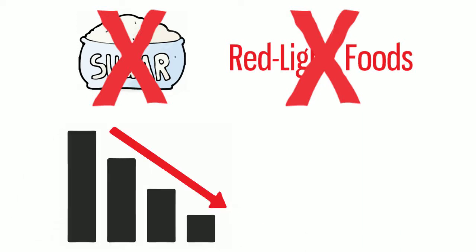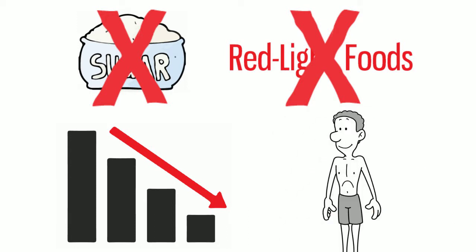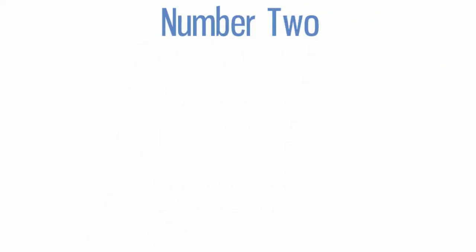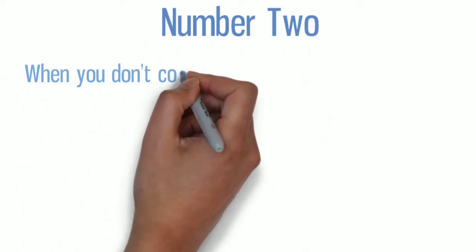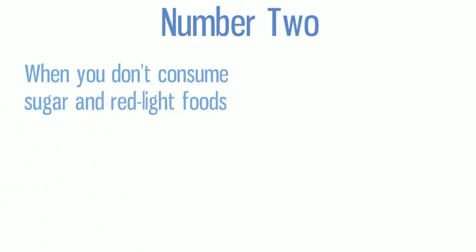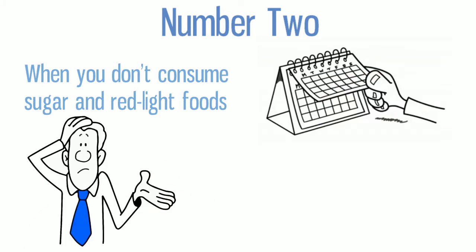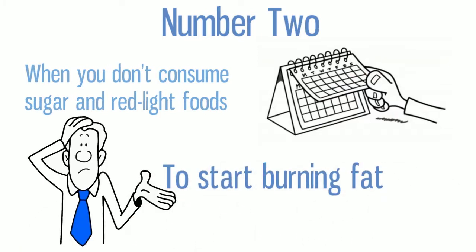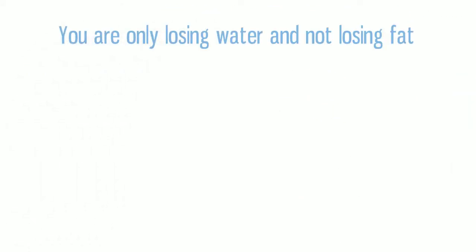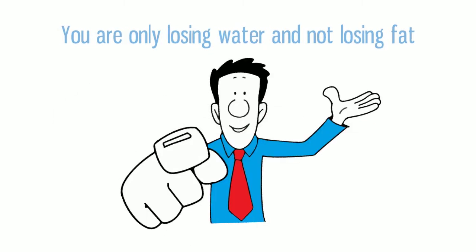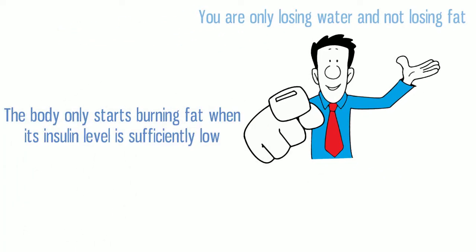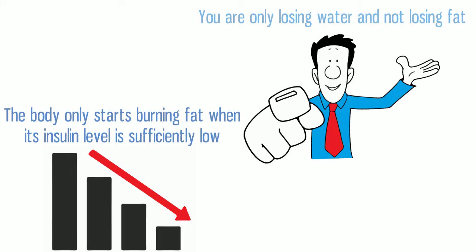Number two: when you don't consume sugar and red light foods, sometimes it takes up to three weeks for your insulin level to be low enough for the body to start burning fat. During these weeks, you are only losing water and not fat. The body starts burning fat when the insulin level is low enough.